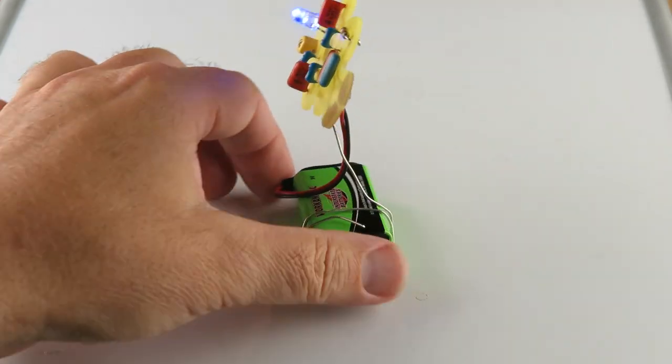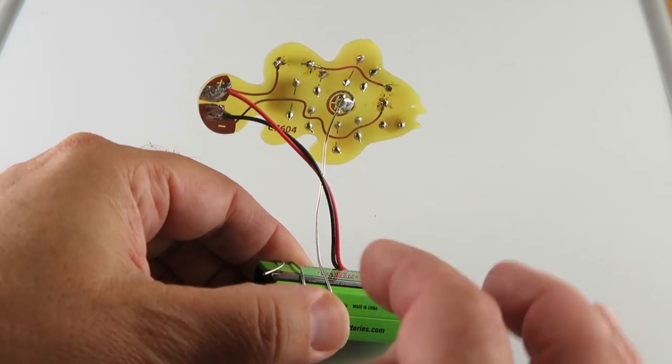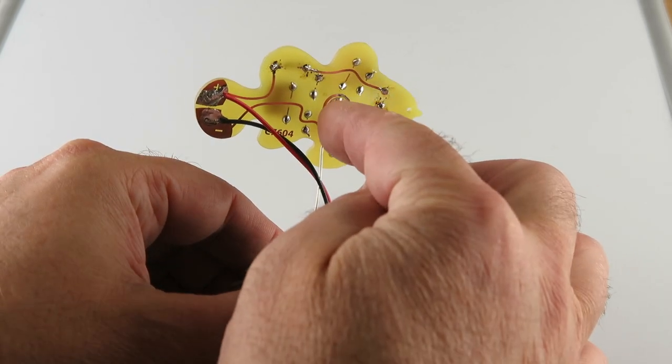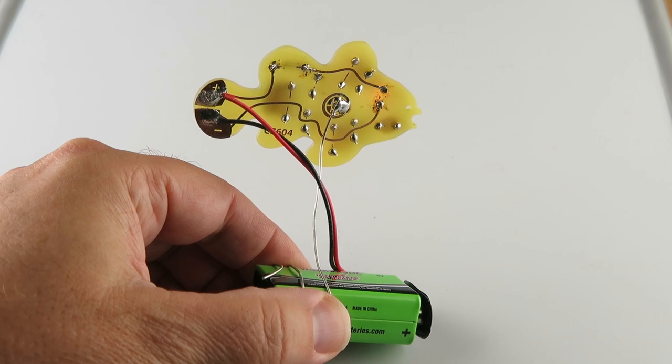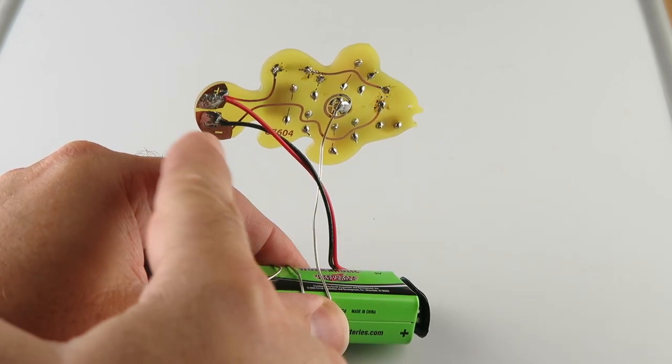And then here's kind of the back side of it here, all soldered up. And as you can see, you just solder this wire to the Cheney logo and then you flat solder the battery snap connectors.